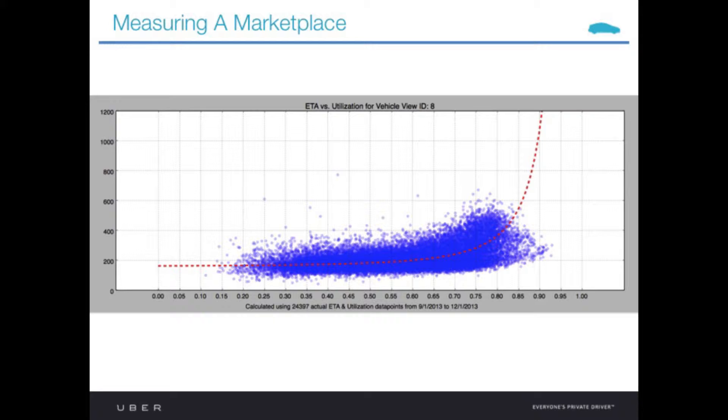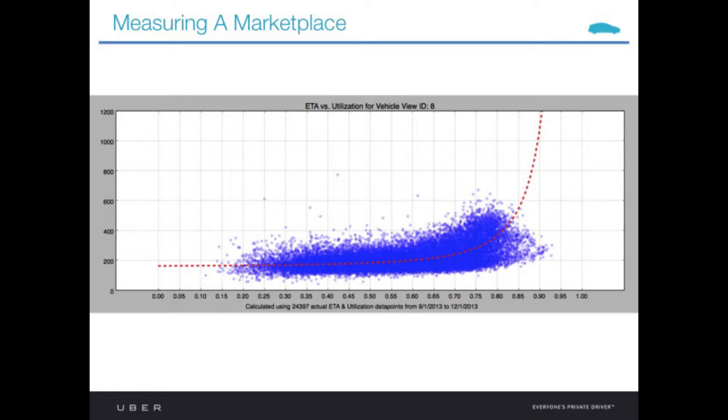This is an example of a graph looking at ETAs, essentially how much time it takes a given car to reach a customer on the y-axis as a function of the utilization of our fleet. Down here at the low end, we have more cars than demand, this is a flooded marketplace. It takes on the order of a minute and a half to get to a customer.